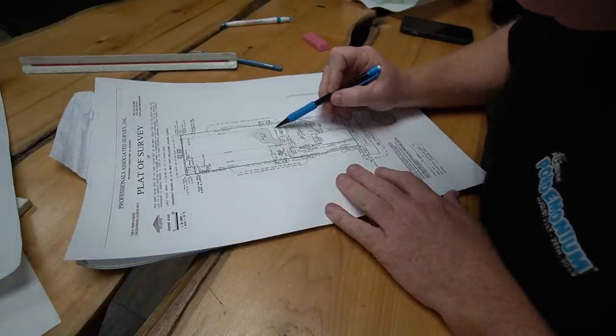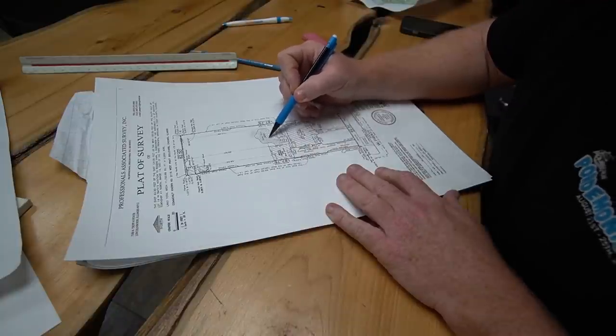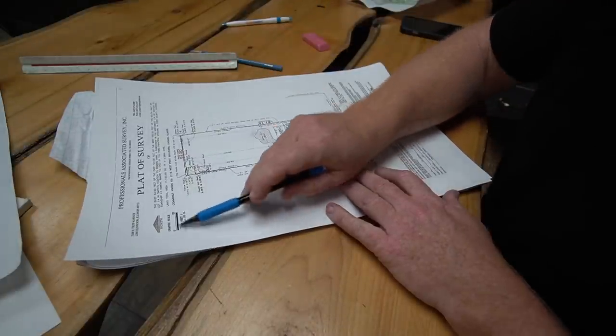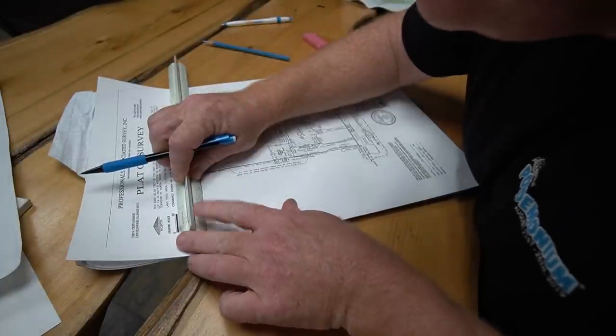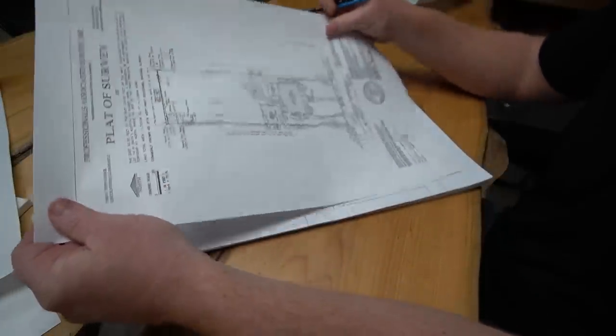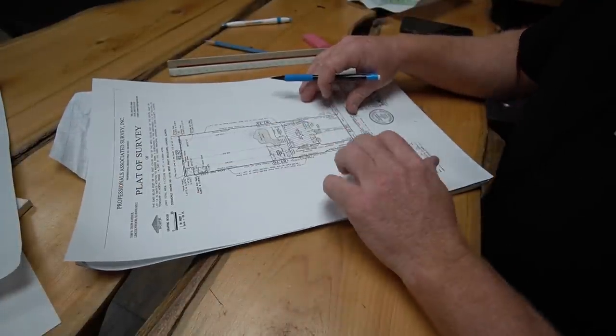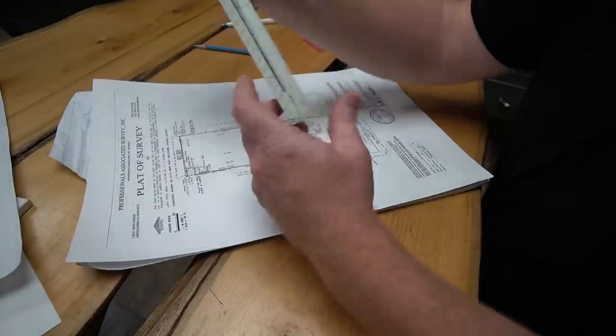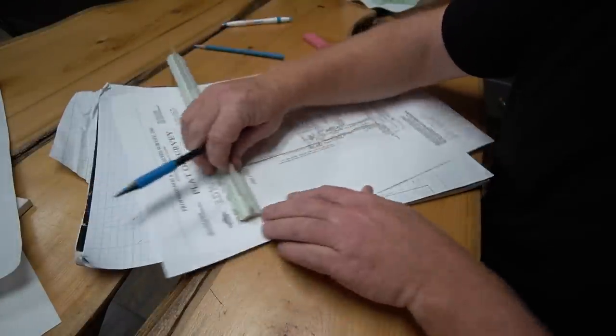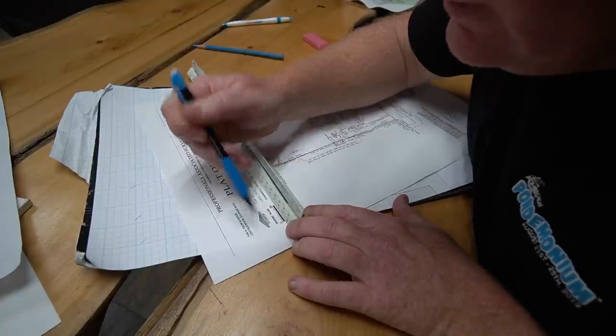So the customer gave me a plat of survey. This is the house, this is an enclosed back porch area, this is their garage, this is their existing stone patio. First thing I look at is the scale of everything. It says one inch equals 20. I double check that to see if that's accurate, and it's clearly not. It's never going to be right on because we printed this. So I have to rescale this thing. I think we're going to go with a 3/16th scale.